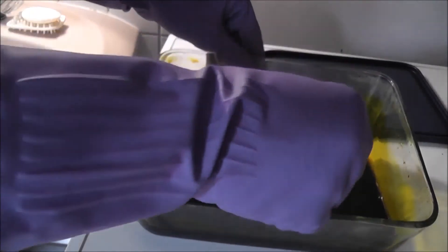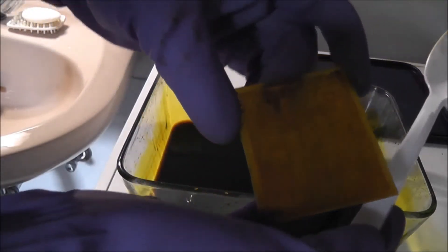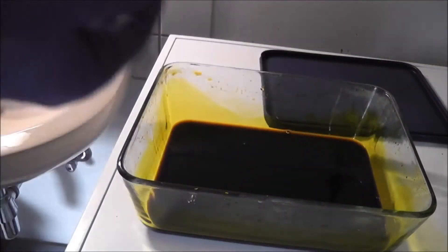When all copper has been etched off the exposed areas, rinse the board with water. The ferric chloride can be reused.